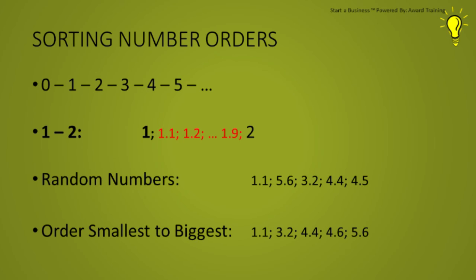This brings us to our final topic of unit standard 9008, sorting numbers. So take a look at the numbers on the slide: 0, 1, 2, 3, 4, and 5. Pretty simple. But what is between 1 and 2? Between numbers 1 and 2, you get 1.1, 1.2, 1.3, and so on up to 1.9. If you are given a set of random numbers as given in the slide, you may be asked to order smallest to biggest. So take a look at our example in the slide. You are given 1.1, 5.6, 3.2, 4.4, and 4.5.